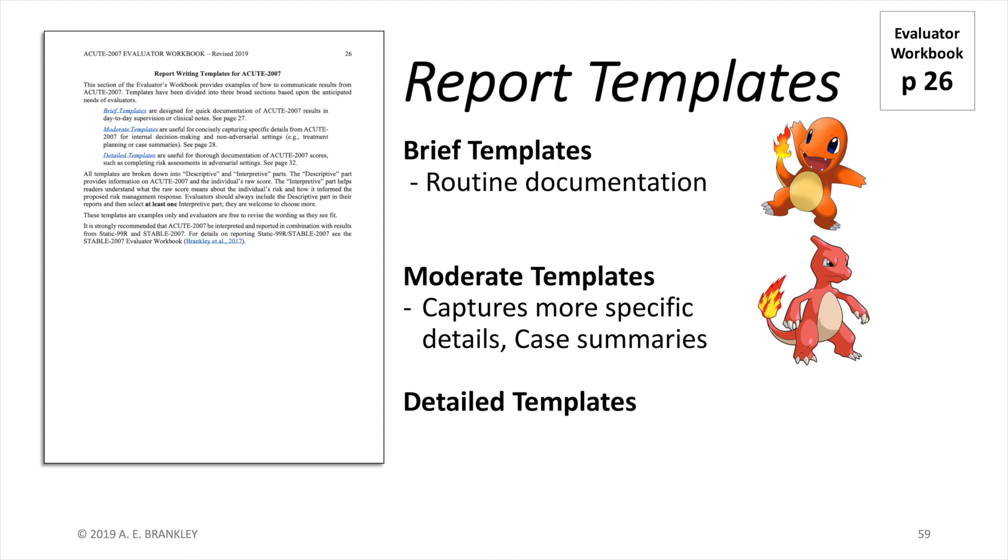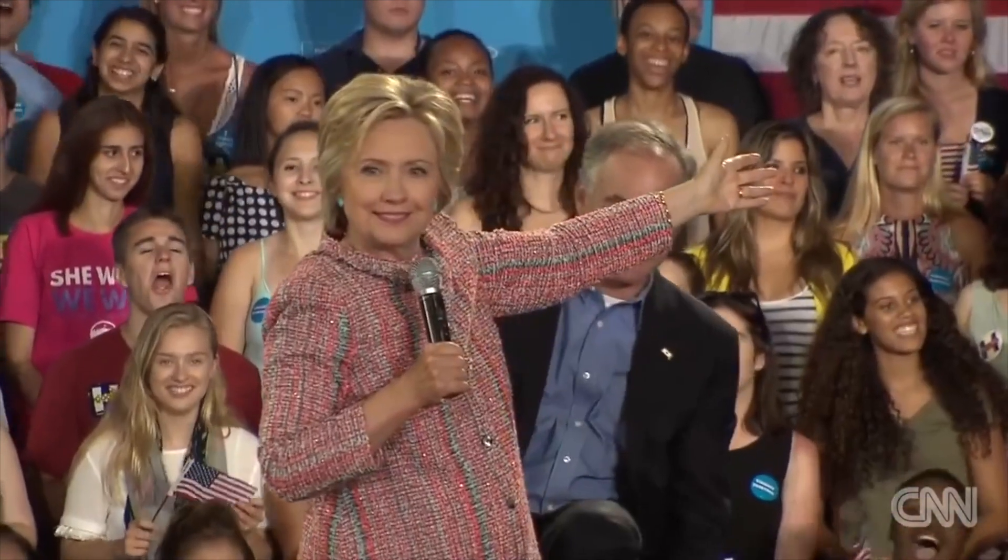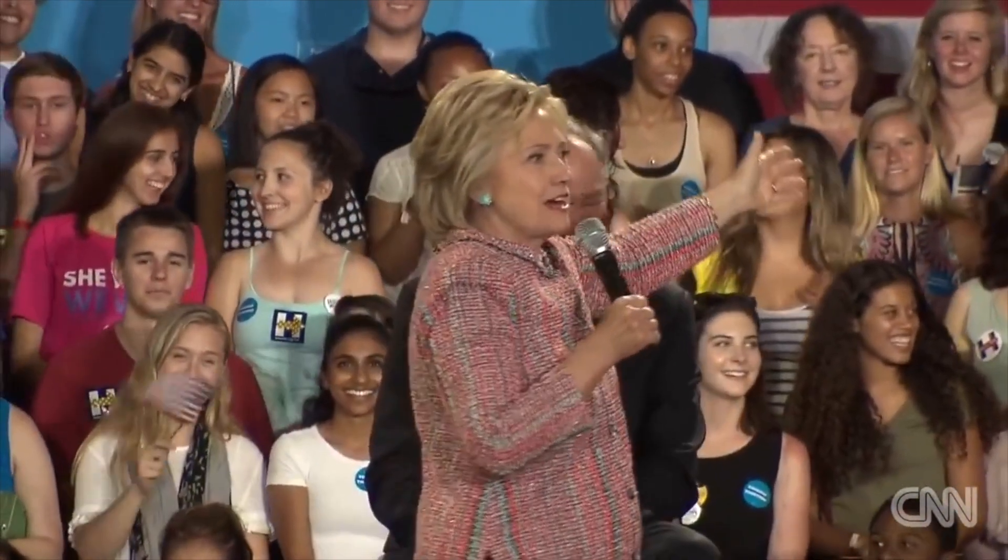The moderate templates are a bit longer, about a paragraph. These are better for non-adversarial settings where you need more detail for decision making. Think of Charmander evolving into Charmeleon here, just a bit bigger. The detailed templates are thorough. They provide as much information as you could possibly require for situations where your assessment will be scrutinized. Don't worry, Charizard has your back. Did I do that right? Am I Pokemon now? Well, at least I won't be the worst Pokemon reference on YouTube. I don't know who created Pokemon Go, but I'm trying to figure out how we get them to have Pokemon Go to the polls.